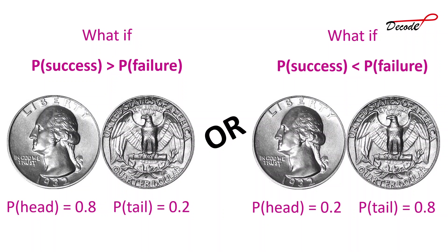In this video, we have seen the binomial distribution problem where the probability of success equals the probability of failure. We discussed the step-by-step procedure for calculating binomial probability for the random variable: number of heads in six coin tosses. Hope you liked this video — please drop your comments and suggestions to improve upcoming videos. You can download the slides, PDFs, and materials used in this video from the description. Thank you for watching, and I will see you in the next video on binomial distribution.